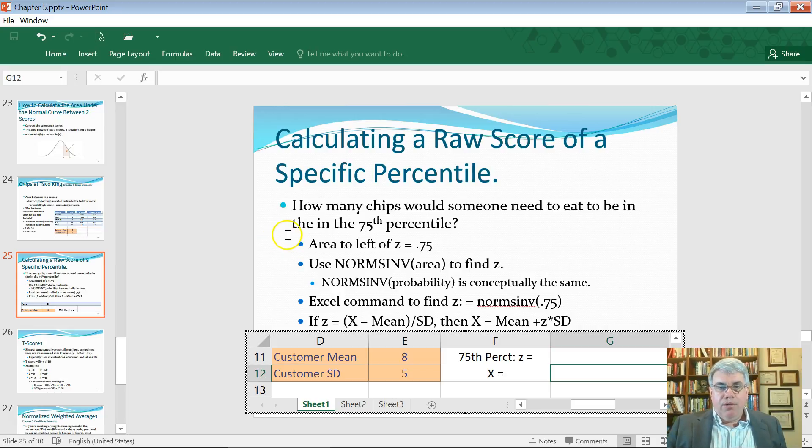Now our question is: how many chips would someone need to eat to be in the 75th percentile? We want to know what the cutoff is for the 75th percentile - who's going to be in the top quarter of the chip eaters versus the bottom 75 percent of the chip eaters.